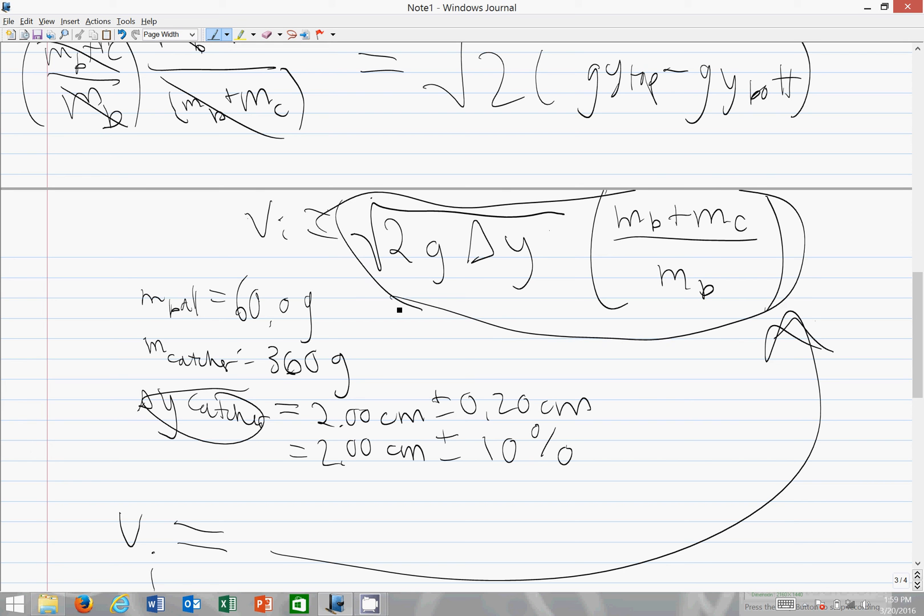So as far as the uncertainty, you have what is happening to delta y. It's being square rooted and other than that just multiplied by numbers that have no uncertainty. So for v initial you're going to have some number plus or minus 5%, because that would be half of 10%, which is the result of the square rooting of delta y. And of course you can convert that back to an absolute uncertainty.